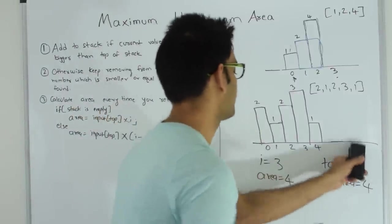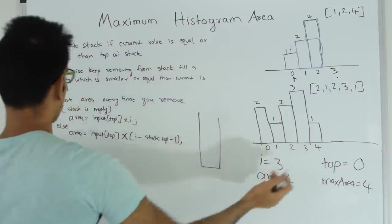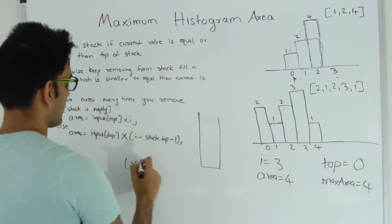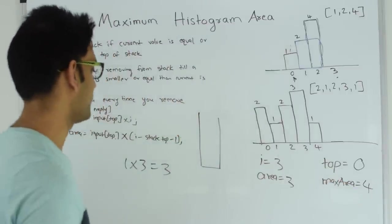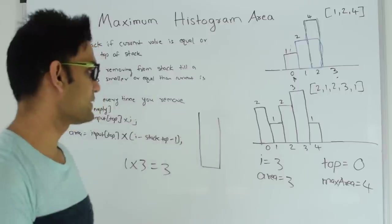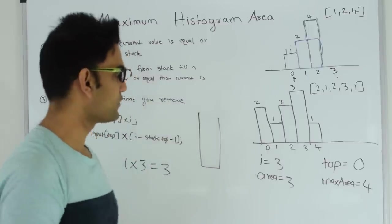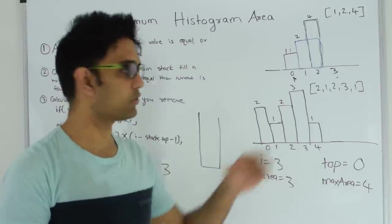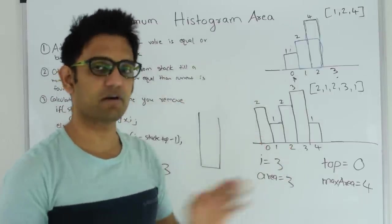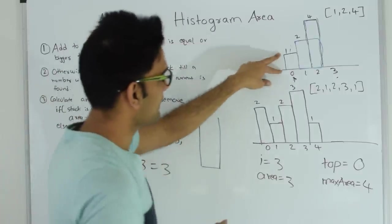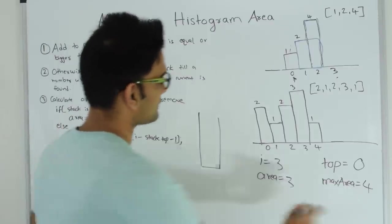Finally top becomes 0. Since the stack is now empty, I apply the formula: area = input[top] × i = 1 × 3 = 3. Area is not greater than max area so we don't change it. When the stack is empty, we multiply by the length of the array, because the last element in the stack is guaranteed to be the smallest value — every value in the array is greater than it. So max area for this example is 4.